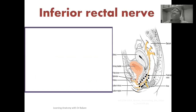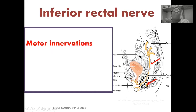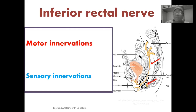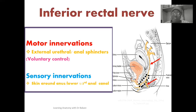Going to the inferior rectal nerve: the pudendal nerve, highlighted in red, is directed into the pudendal canal, and within it gives off the inferior rectal nerve. This inferior rectal nerve gives both motor and sensory innervations. The motor innervation is to the external anal sphincter, to elicit voluntary motor action. The sensory innervation is to the skin around the anus and also the lower one-third of the anal canal.